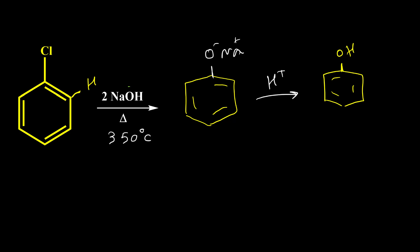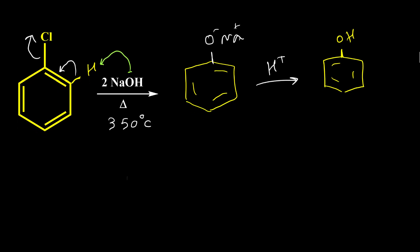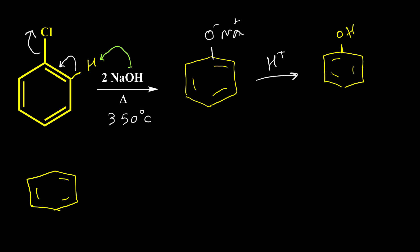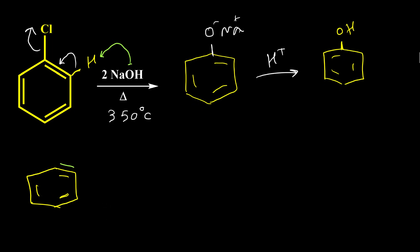The hydroxide anion acts as a base and takes this hydrogen. The C-H electrons go here, and then we have expelling of chlorine. As a result we get an intermediate where the benzene ring has a triple bond, so for this reason it's called benzyne.